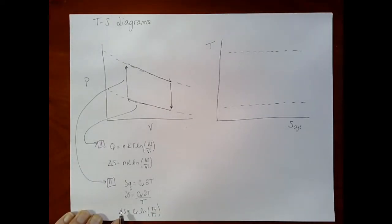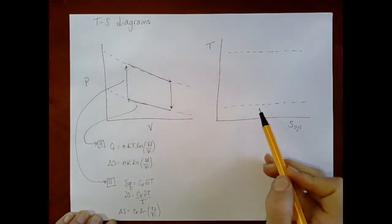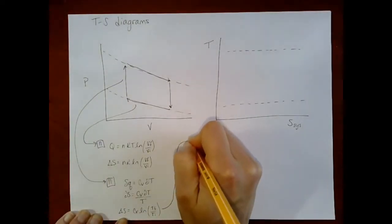Alright, so now to know how to plot, this is a function of entropy in terms of temperature. So to know how to plot this on our temperature entropy diagram, we're going to have to re-solve this for temperature. So why don't you pause the video and we're going to solve this for T.